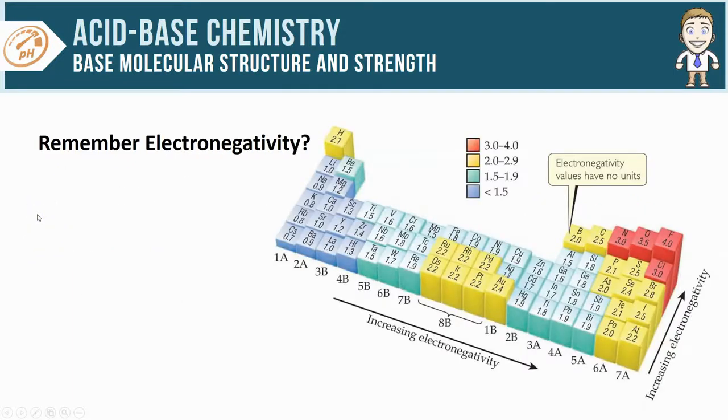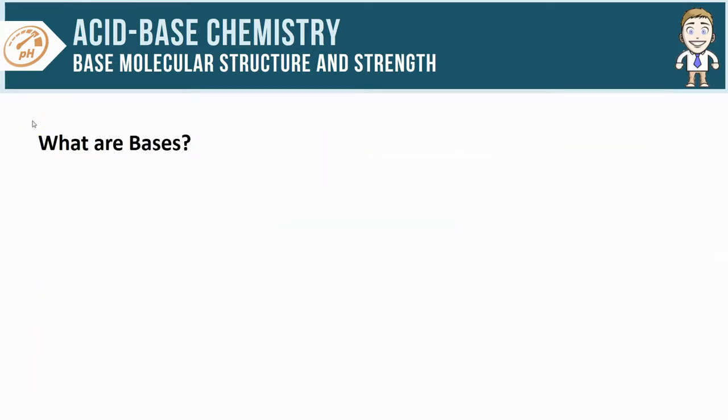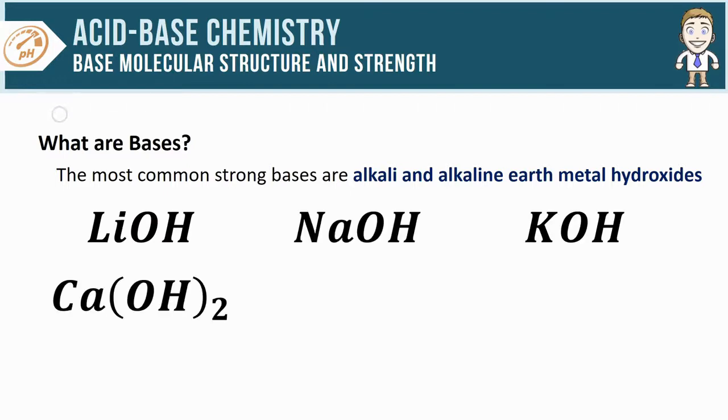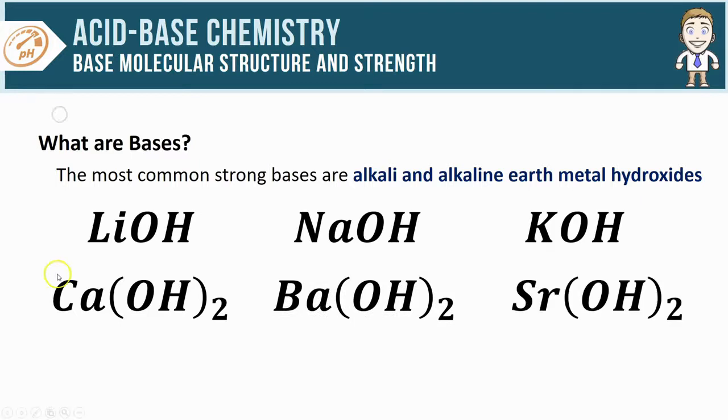For this video, you're also going to have to remember the trend in electronegativity values shown here. Let's start off by clarifying what exactly bases are. They're a little bit confusing in that there's some different types that are out there. The most common strong bases are alkali and alkaline earth metal hydroxides that look like this: lithium hydroxide, sodium hydroxide, potassium, calcium, barium, or strontium to list just a few.